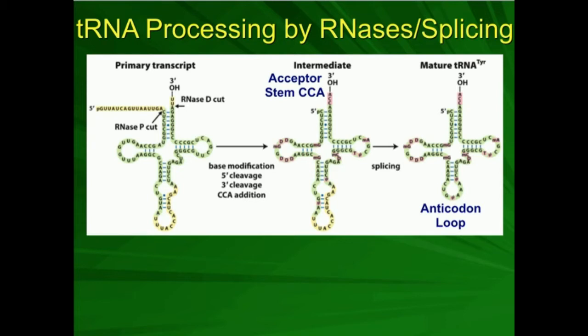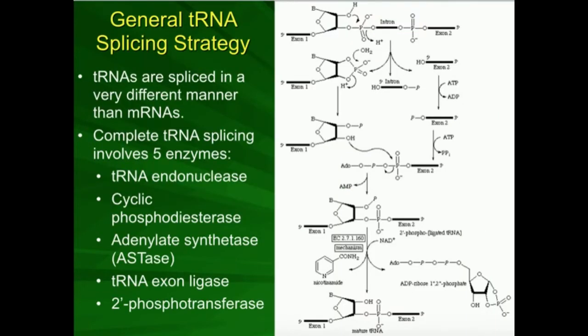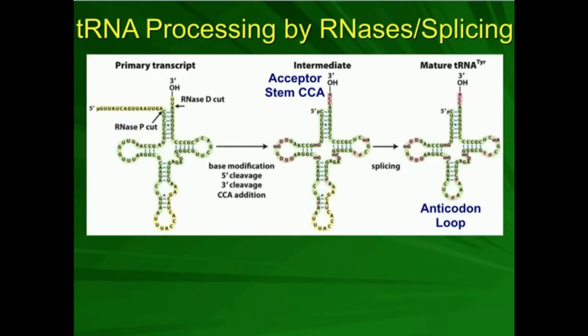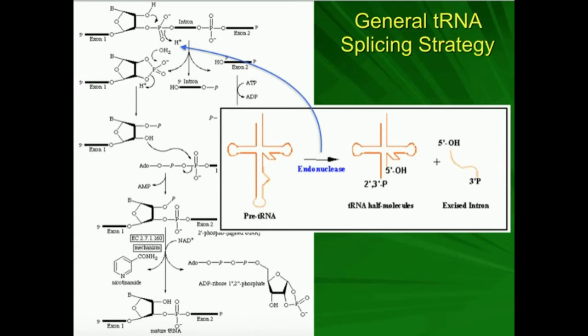This part right here, this last step to get the mature tRNA, we have to splice out this yellow sequence right here, which is an intron. We need to put together these green exons. So that's why this is classified as splicing. So the first exon is right here. We have that intron sequence in the middle, and then exon 2. So all tRNAs, once they get to that intermediate, they have two exons and one intron. Now we need to get rid of the intron.